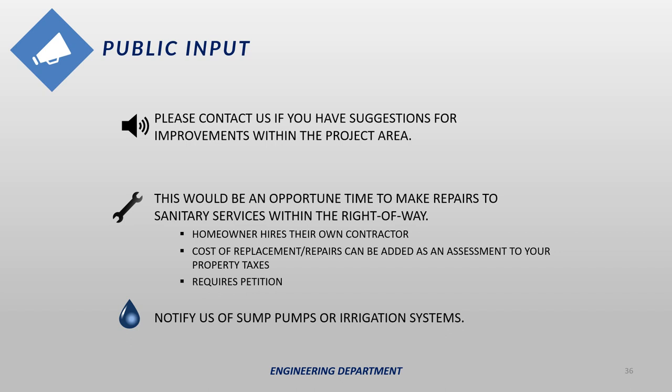We like to provide opportunities for residents to provide feedback or ask questions, so please feel free to reach out by phone or email with any questions or suggestions. This is also a good time to talk to us if you need to make repairs to your existing sanitary service — there are ways the cost of replacing the service on your property can be assessed to your property, subject to some restrictions and paperwork. Please also let us know if you have a sump pump line or an irrigation line in the boulevard. Often we only find out about these after we've dug them up. If you have one, we can mark it before construction and do our best to avoid it, though you may be required to relocate it if we can't.